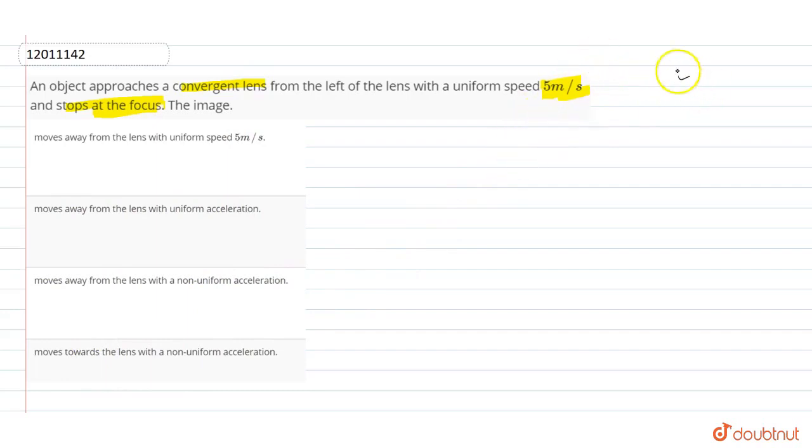So we know our lens is here with foci on both sides. When the object is at infinite distance, where will the image form? The image will form at the focus.